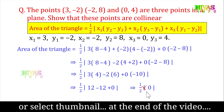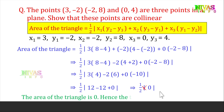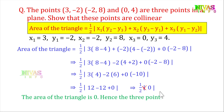The area of triangle value is zero, so the three points are collinear. They lie on the same line. This is the answer.